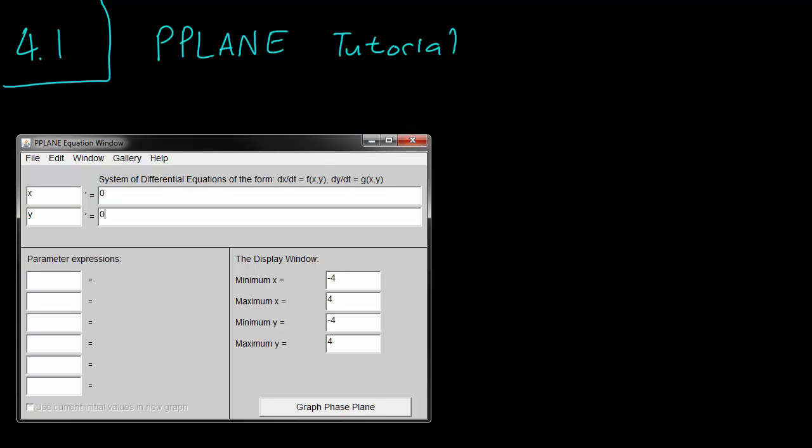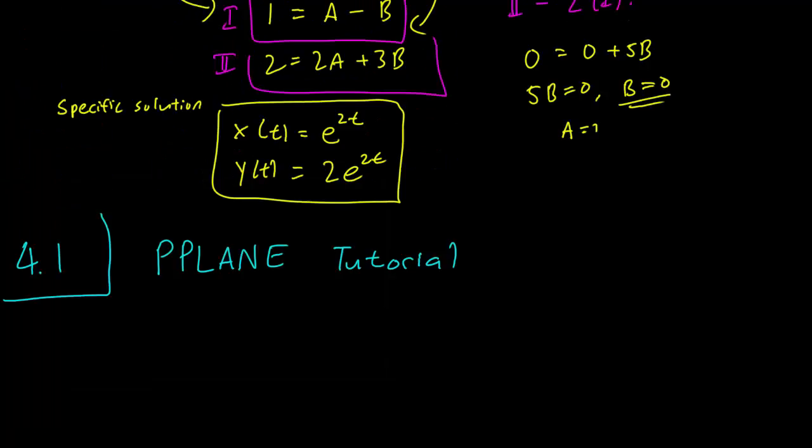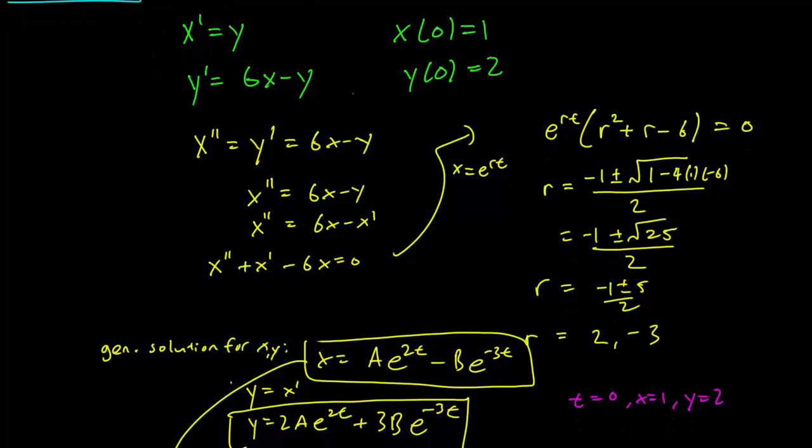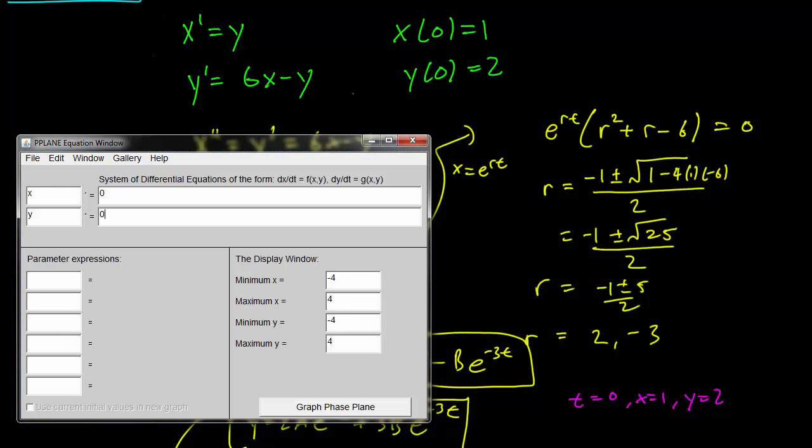Let's go back to our old example. Remember in the last video we had a system that we solved. So x prime equals y, y prime equals 6x minus y with initial conditions. Maybe we wanted to see if our solution was correct, and we can use this program to check.